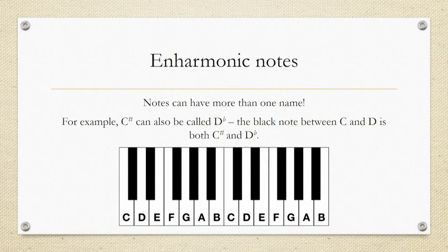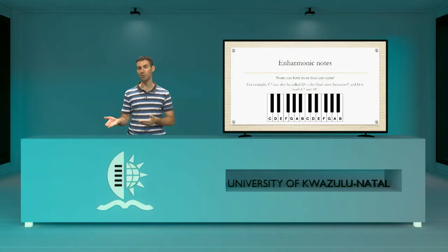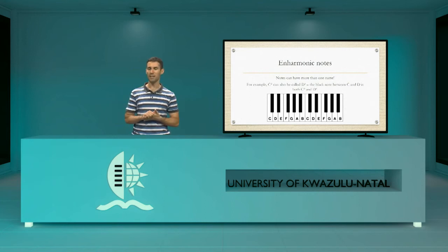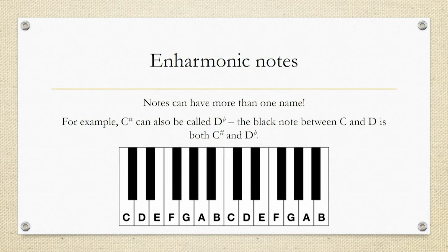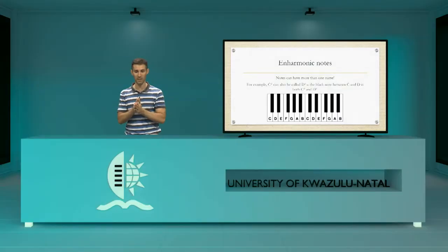In a test or exam if you are asked to provide the enharmonic name for a note, you are looking for that other name depending on which direction you are coming from. Have a look at the keyboard again because there are two interesting cases. Look at E and F — there's no black note in between them. So if we go up a step from E, that's the same as F, or we can call it E sharp. Going the other direction, F down a step is F flat, but F flat is also E. That's an enharmonic note. Even white notes can have enharmonic names, but mostly it applies to black notes like C sharp and D flat.